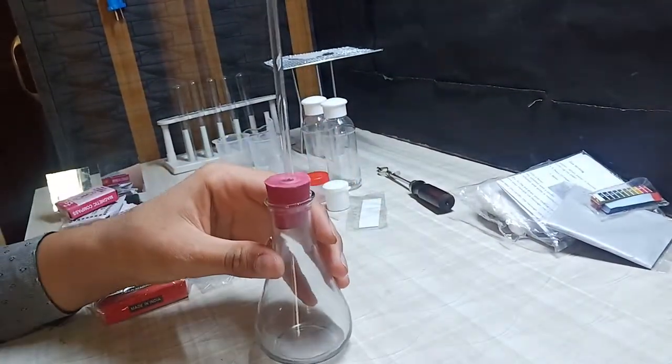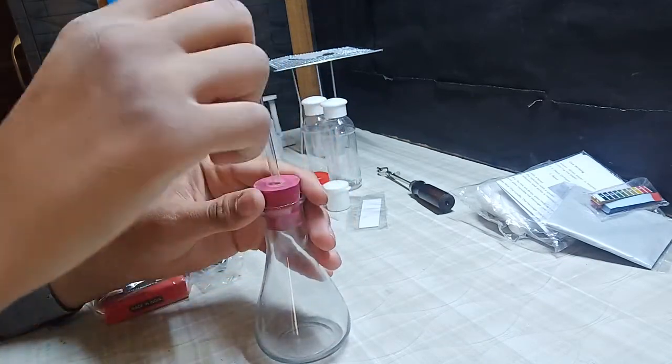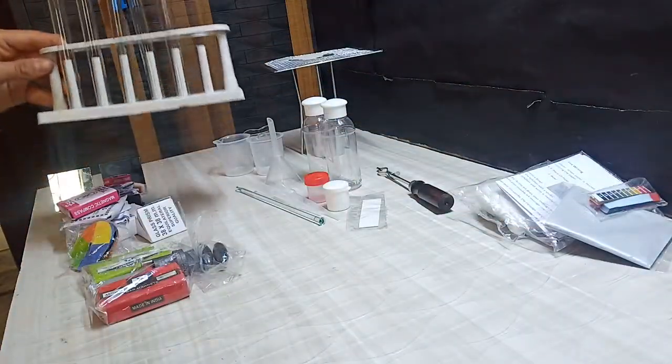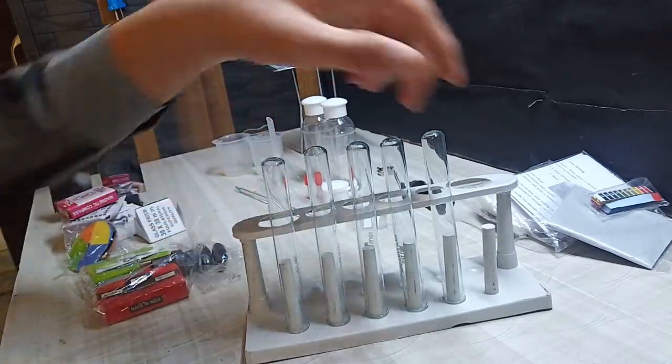This is the beaker and this is the cork for it. This is a kind of straw which is used to pour liquid through it. These are the test tubes, there are five pairs of test tubes, and this is the holder.